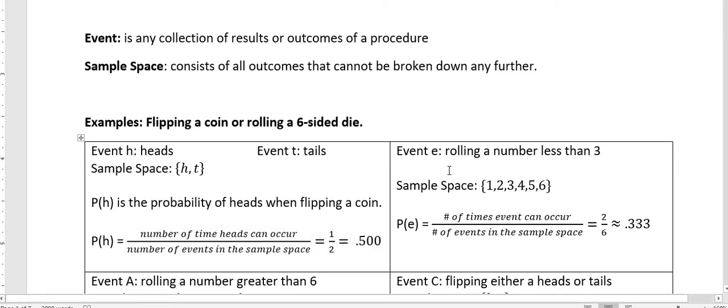In the second one, I'm rolling a six-sided die. The event E is rolling a number less than three. Well, the sample space when you roll a six-sided die is one, two, three, four, five, or six. I have six different outcomes when I'm rolling a sample space.